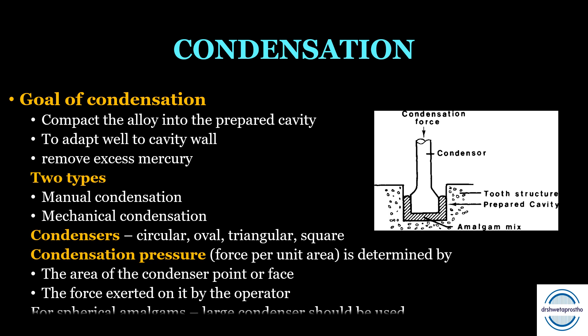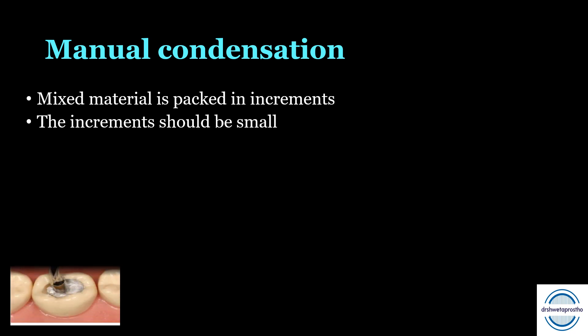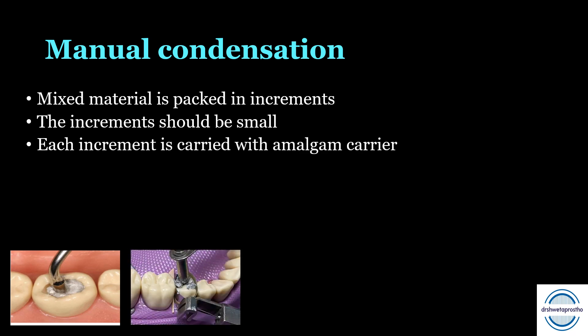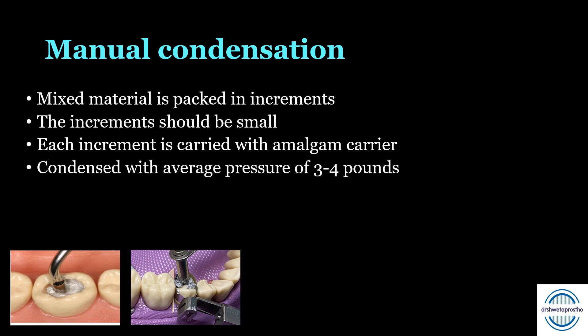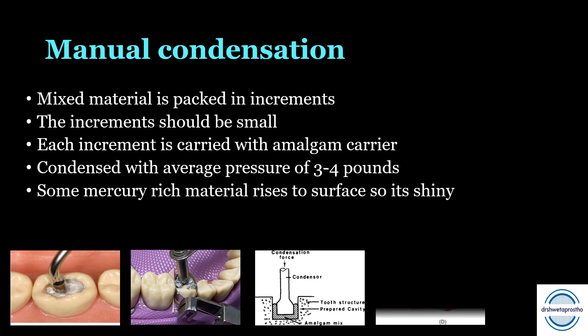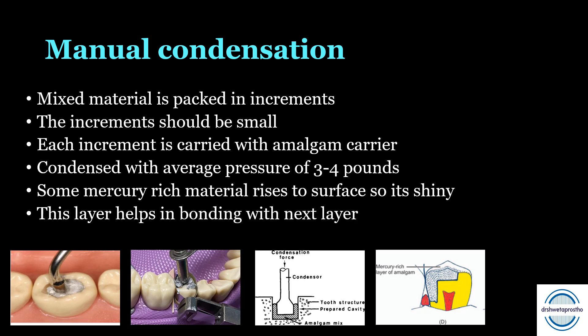For spherical amalgams, large condensers are used. In manual condensation, the mixed material is packed in small increments, each carried to the prepared cavity with an amalgam carrier and immediately condensed with an average pressure of three to four pounds. As condensation occurs, mercury-rich material rises to the surface, giving a shiny appearance. Some of this layer can be removed, and the remainder helps in bonding with the next increment.